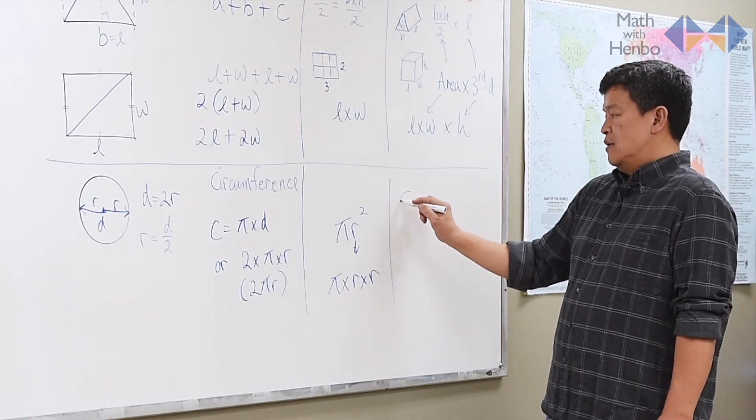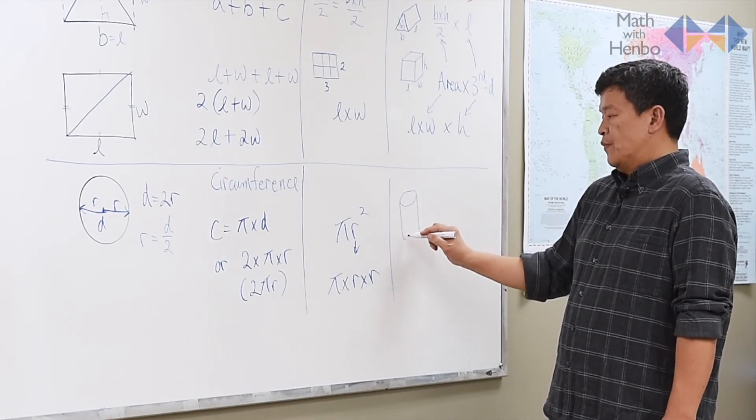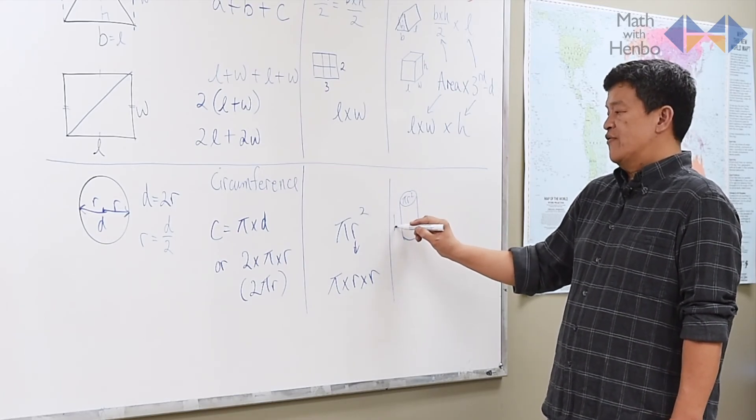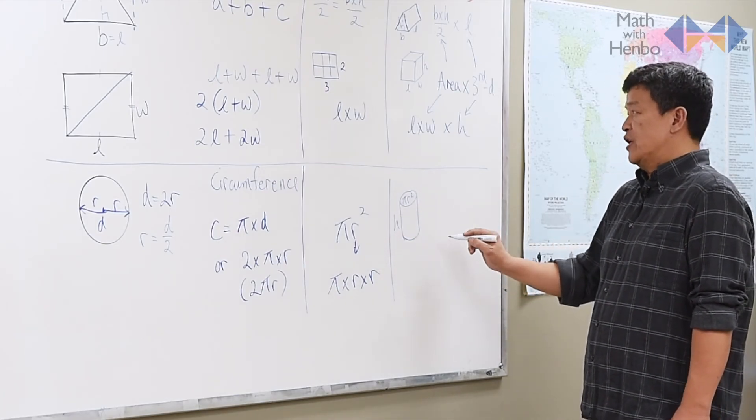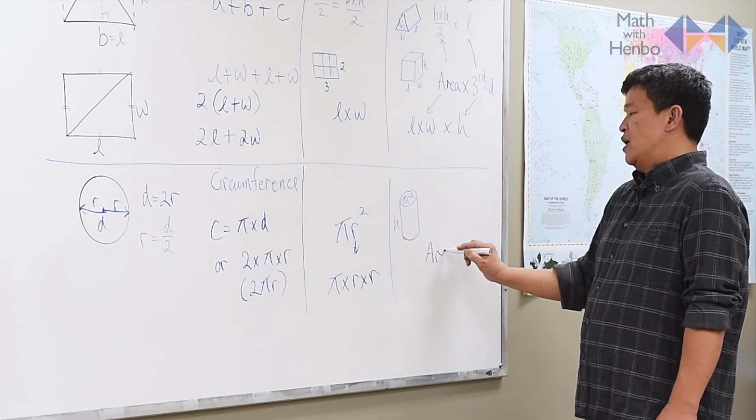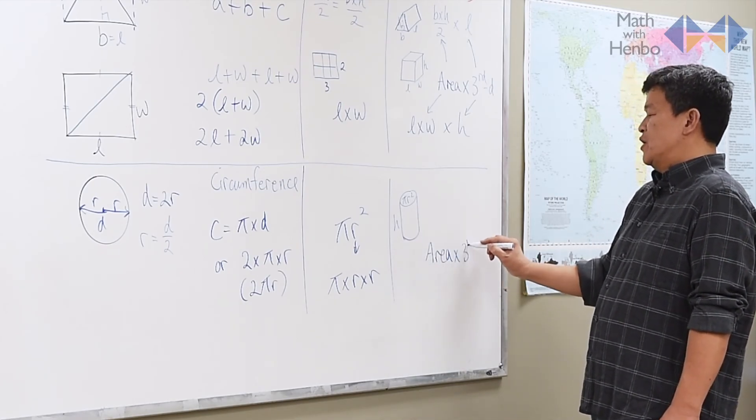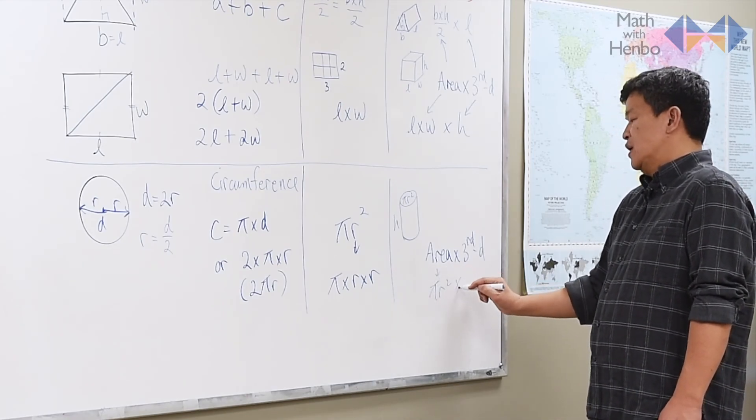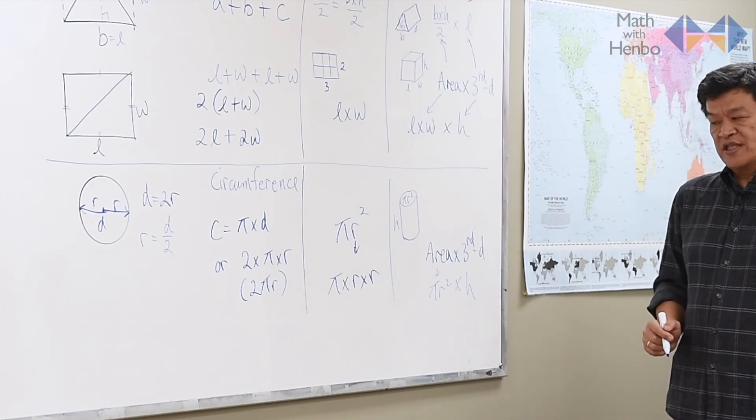As for a cylinder, we know this is πr². So all we have to do is multiply by the third dimension again. So here, area times the third dimension gives us πr² times the height. And that is for the cylinder.